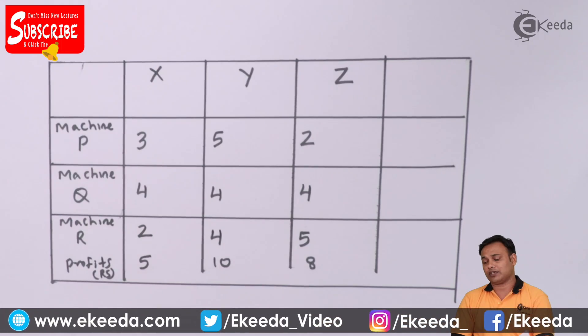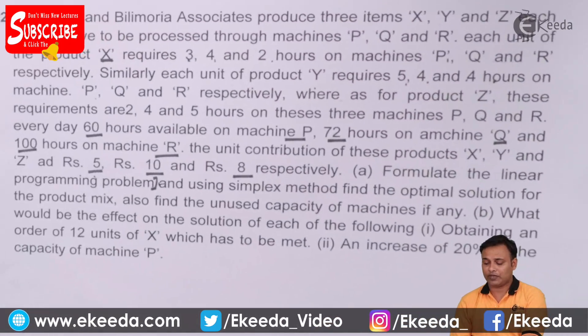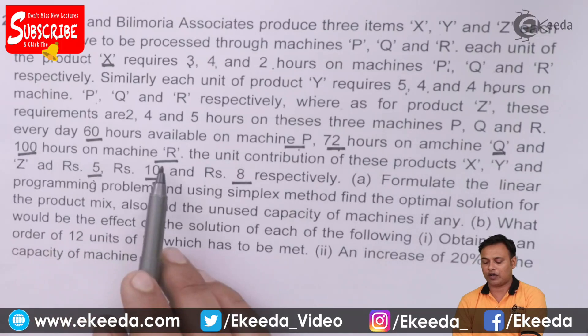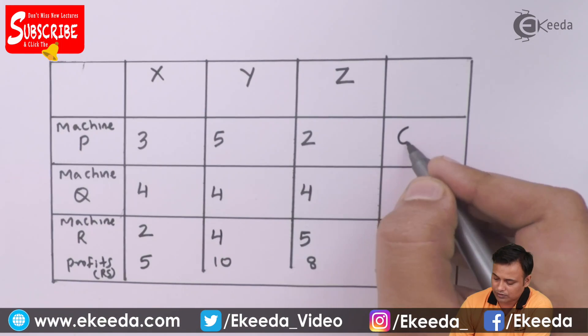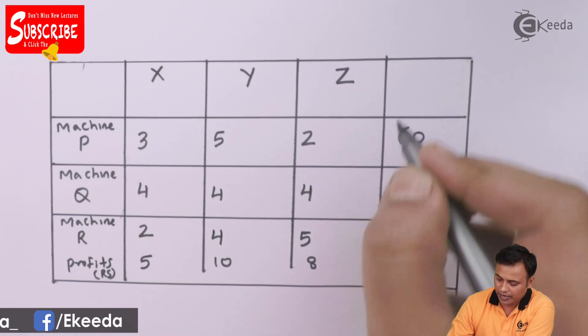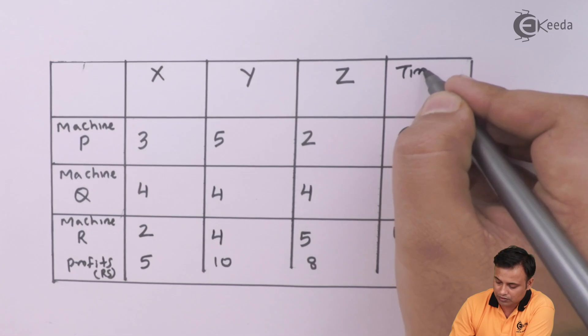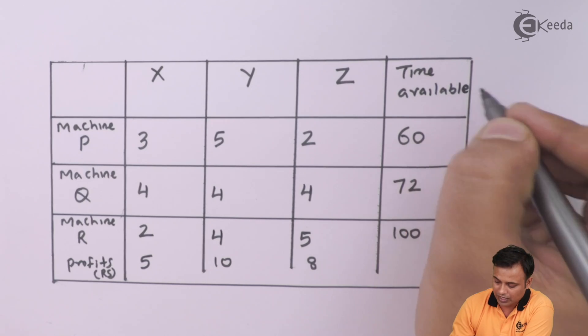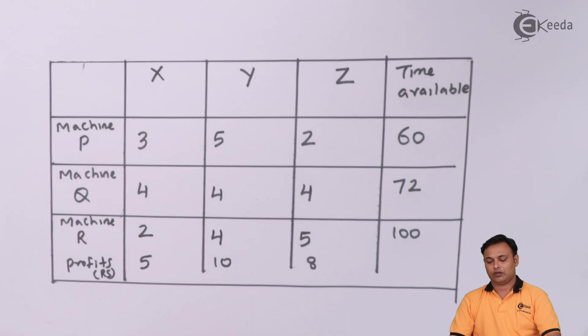And then we are also given the machine time. We have 60 hours of P, 72 of Q and 100 of R. So P is 60 hours, 72 hours and 100 hours. This is the time available. What next?